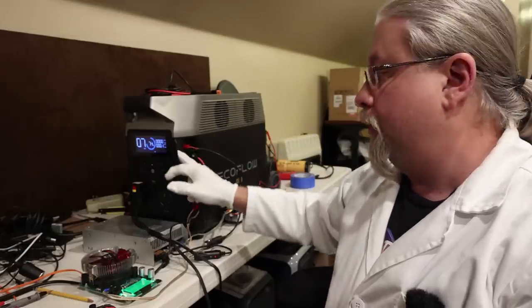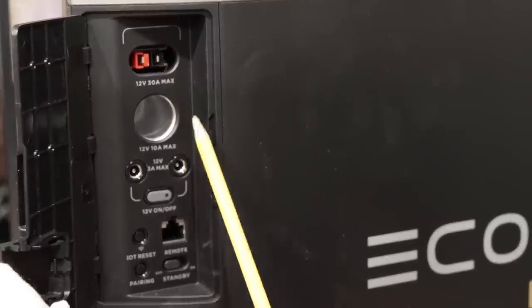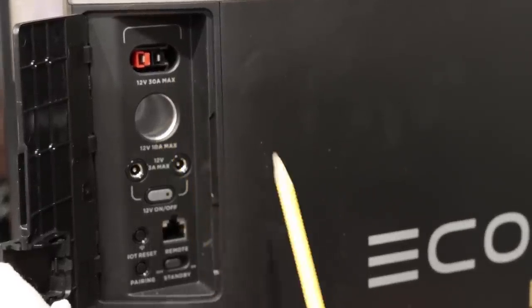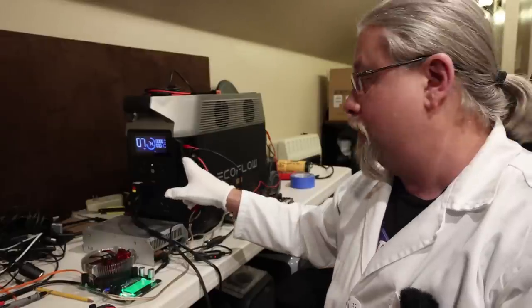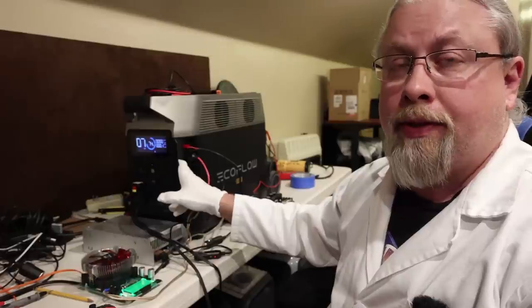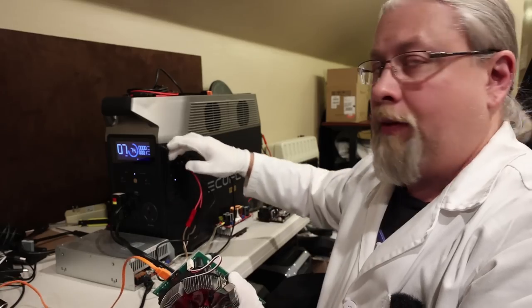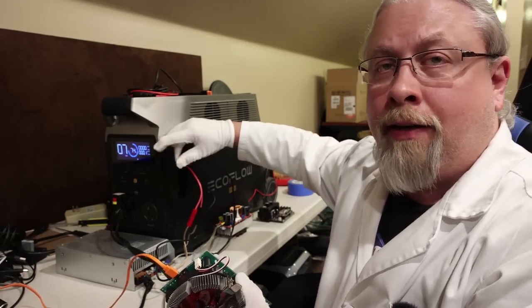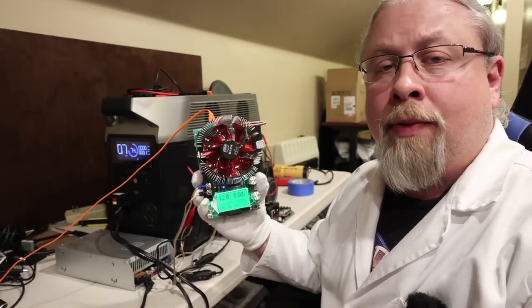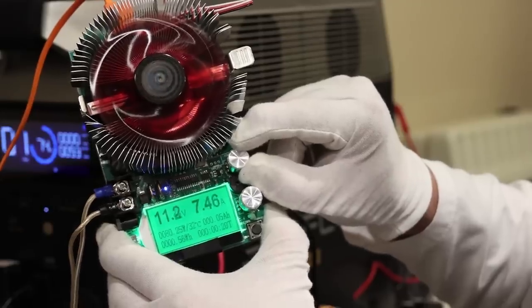Next, let's review these 12 volt outputs. The Delta Pro has a 30 amp Anderson output, a regular cigarette lighter output good for 10 amps, and then it has a pair of 3 amp 5521 ports. Let's see what the differences are between these. So I have this little testing tool plugged into the 12 volt cigarette lighter output good for 10 amps. It is regulated at 12.8 volts. There we got 6 amps. The voltage is dropped.